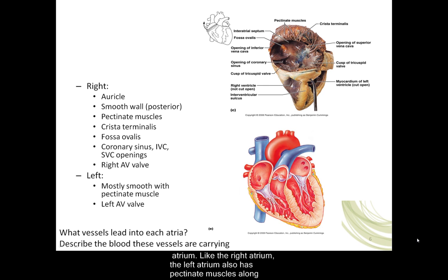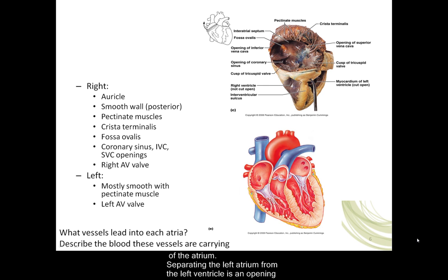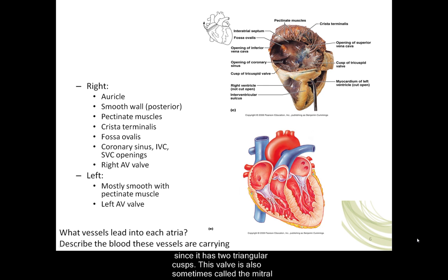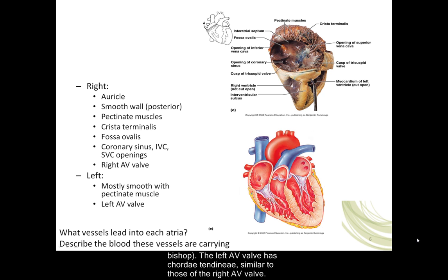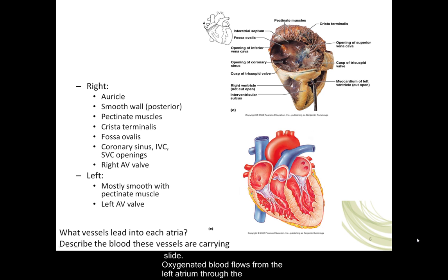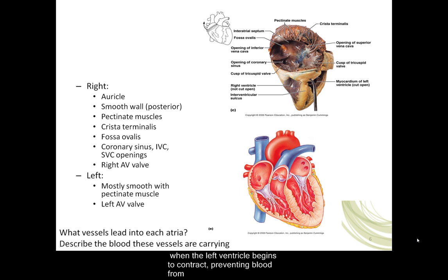Like the right atrium, the left atrium also has pectinate muscles along its anterior wall as well as an auricle, which is a wrinkled flap-like extension of the atrium. Separating the left atrium from the left ventricle is an opening covered by the left atrioventricular valve, also called the bicuspid valve since it has two triangular cusps. This valve is also sometimes called the mitral valve since the two triangular cusps represent a mitre, a headpiece worn by a bishop. The left AV valve has chordae tendineae similar to those of the right AV valve. Oxygenated blood flows from the left atrium through the atrioventricular opening into the left ventricle, and the left AV valve is forced closed when the left ventricle begins to contract, preventing blood from back flowing into the left atrium.